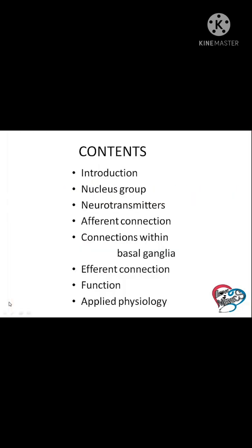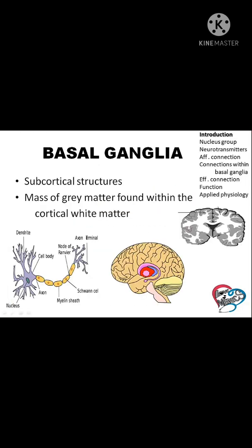Basal ganglia is the subcortical structure. Basal means base, ganglia means group of nucleus. In the base of the cerebrum, a group of nuclei are located — that is basal ganglia.